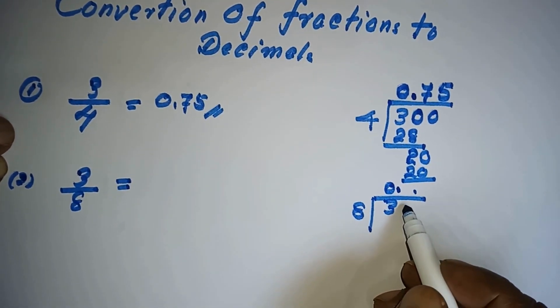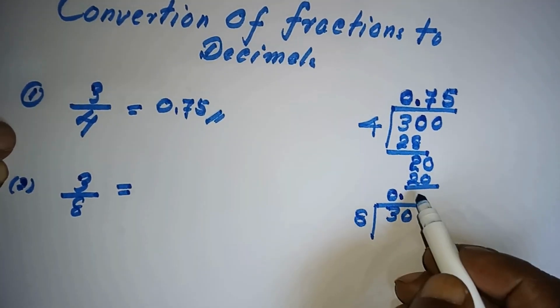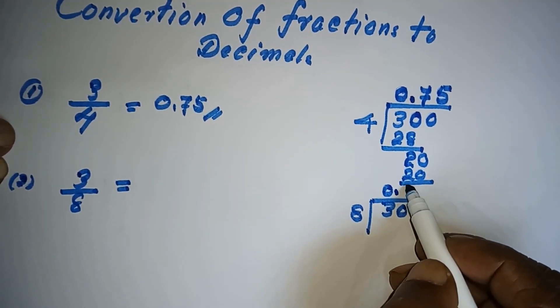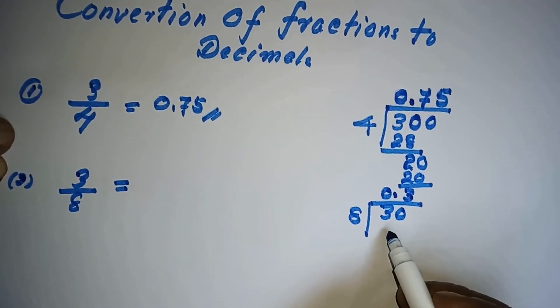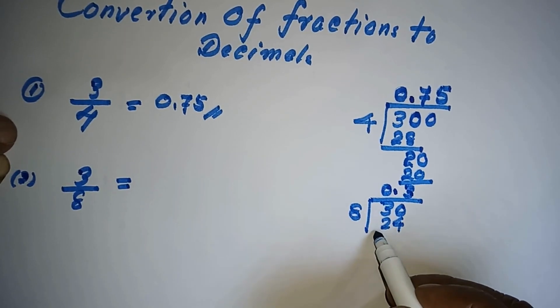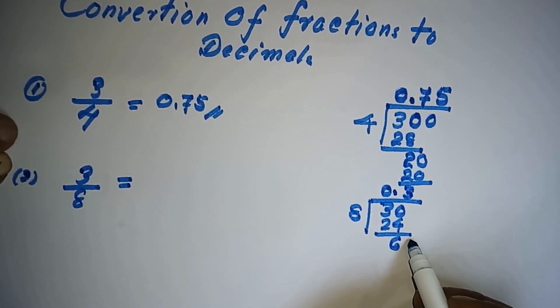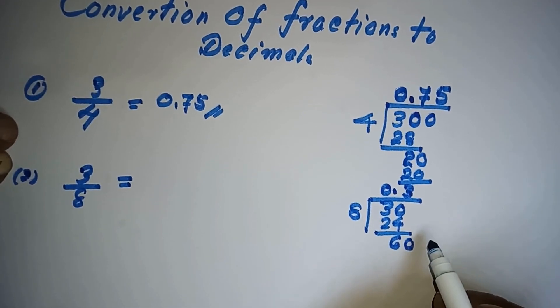Put 0 here. Now see how many 8's are there for 30, that is 3. Then 8 times 3 is 24, so the balance is 6. You'll have to take another 0 here.